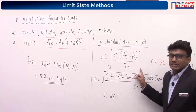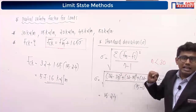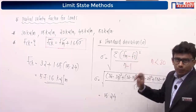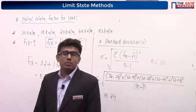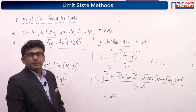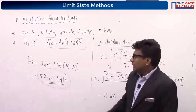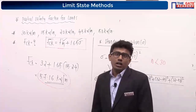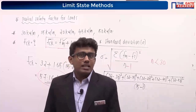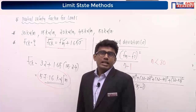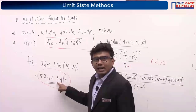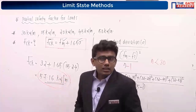Remember: when the number of samples is less than 30, use n minus 1 in the standard deviation formula; when samples are greater than or equal to 30, use n. The characteristic load is 57.16 kN/m. For design load, multiply by the partial safety factor for live load, which is 1.5, giving 85.74 kN/m.